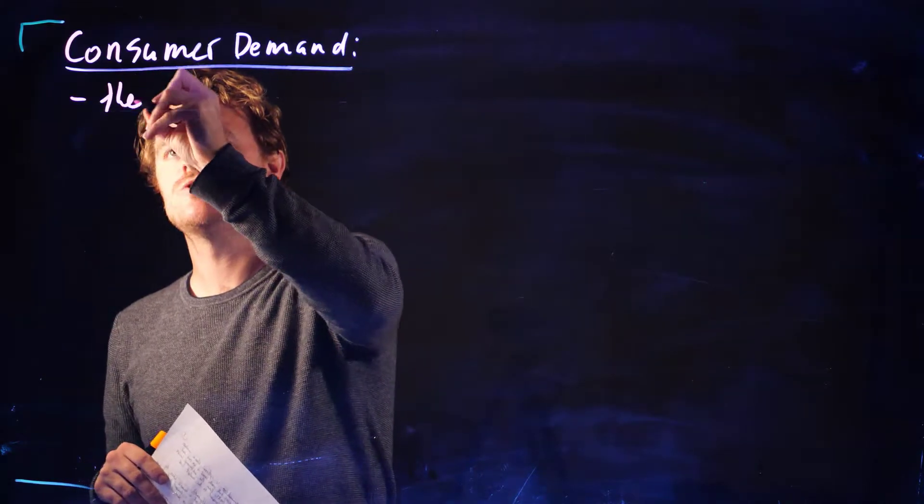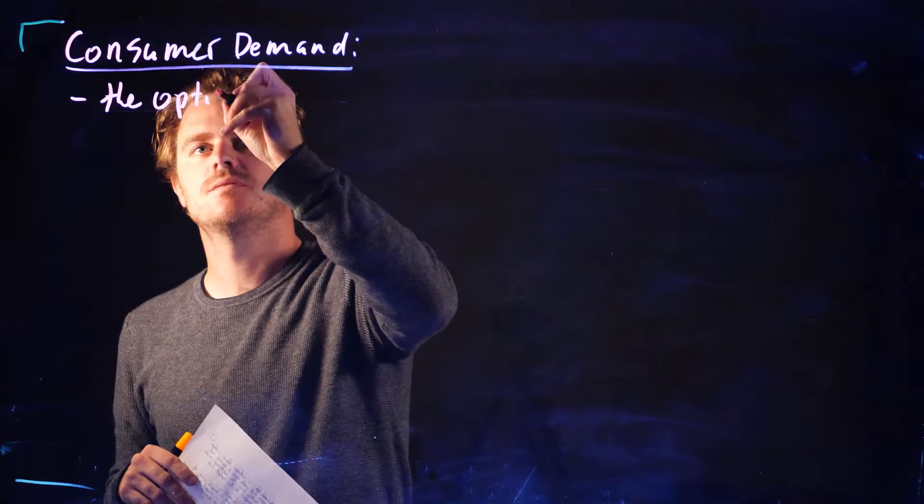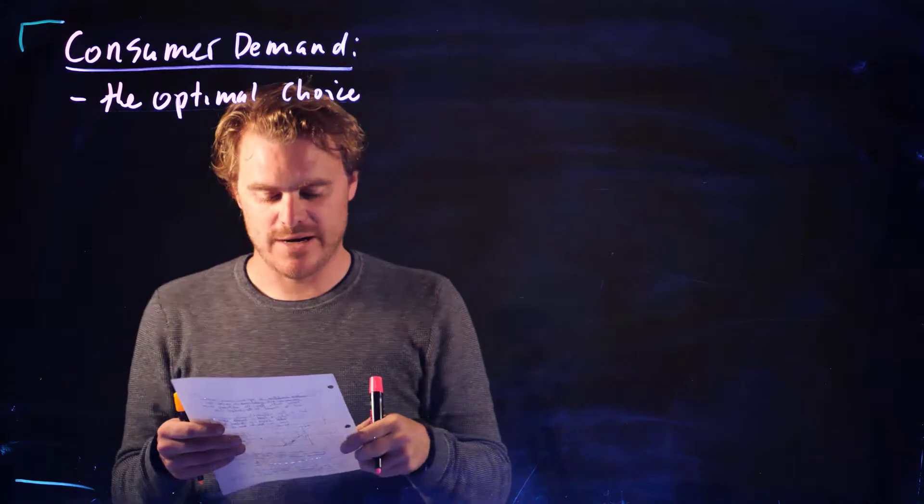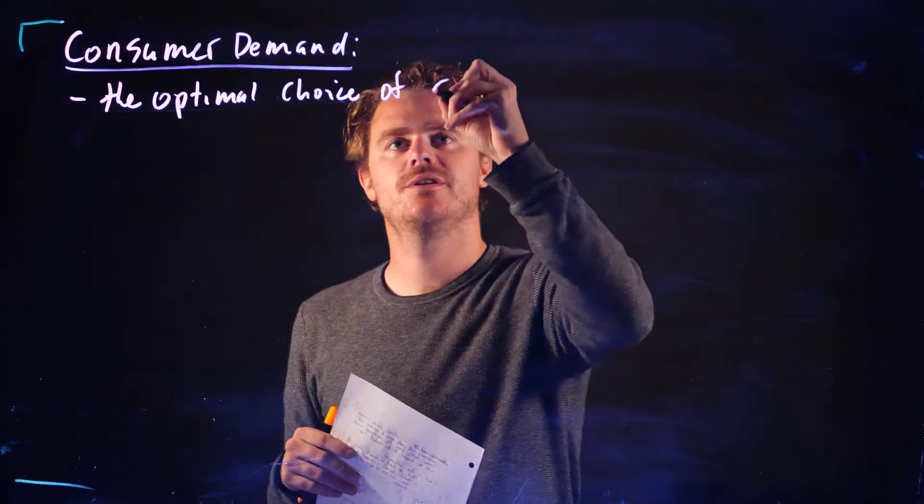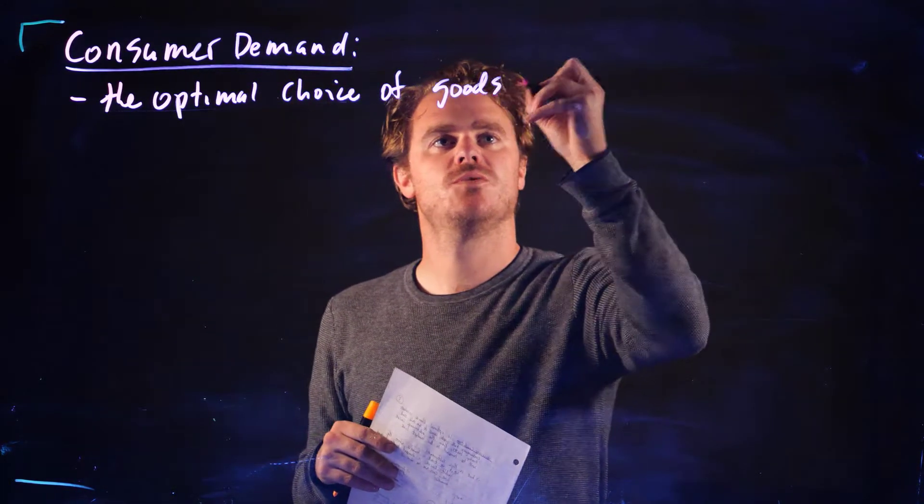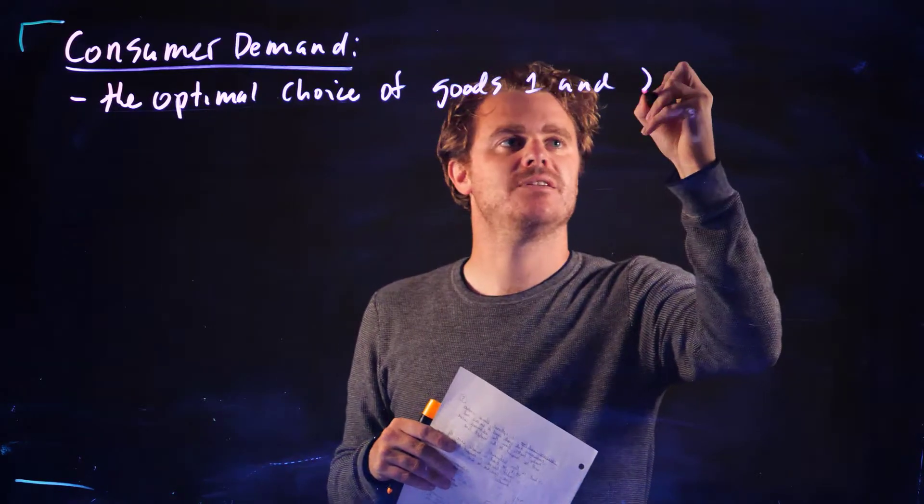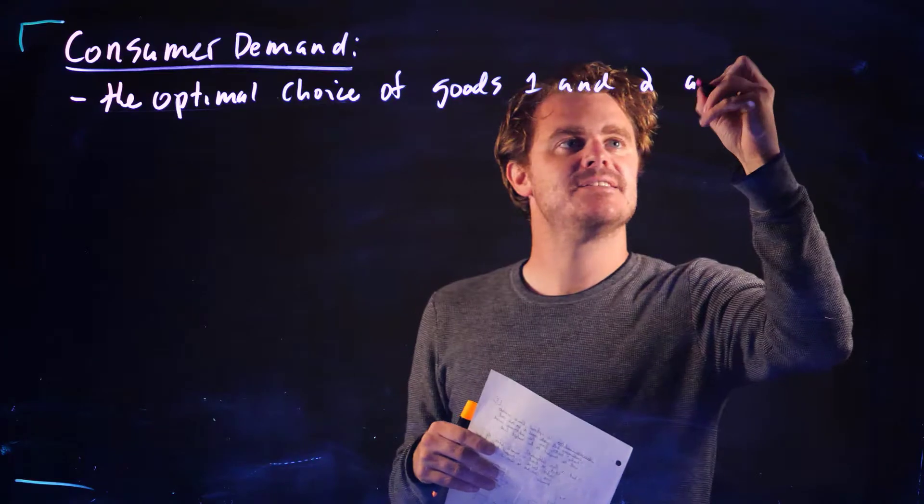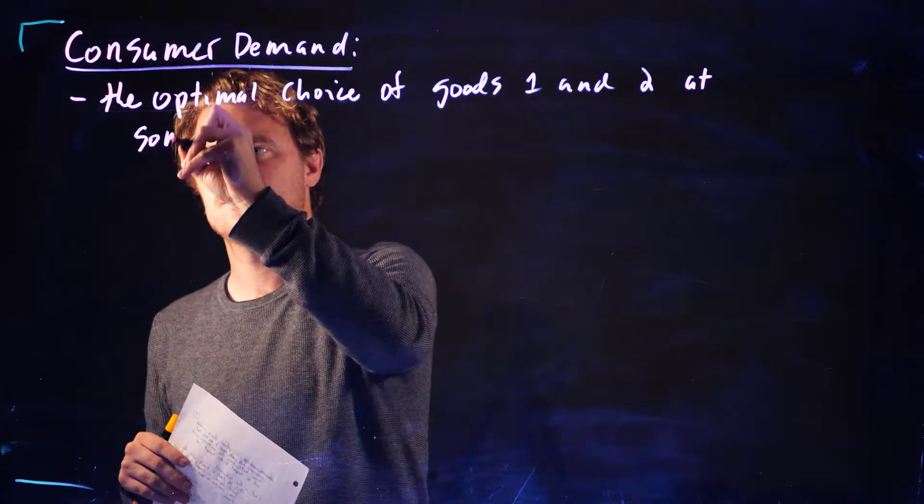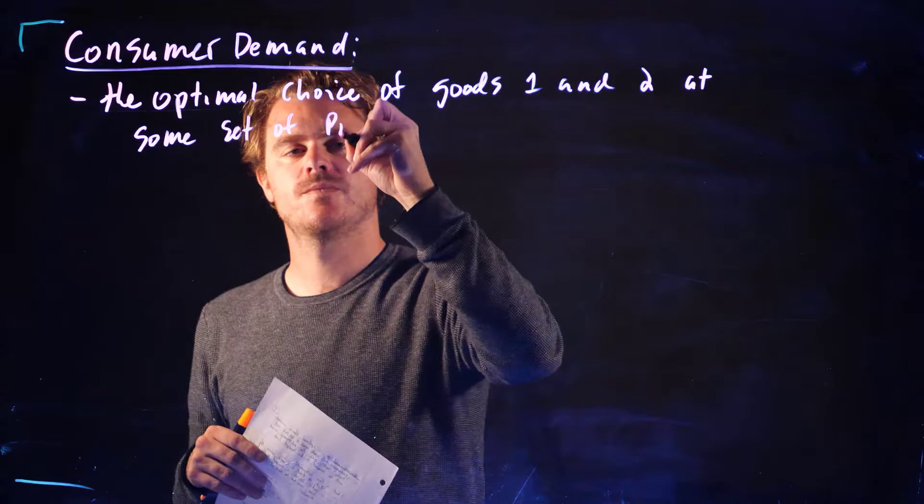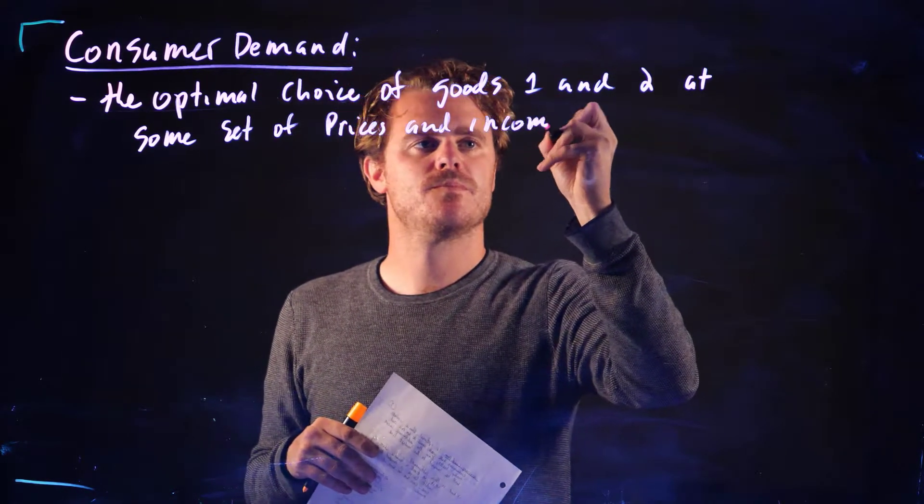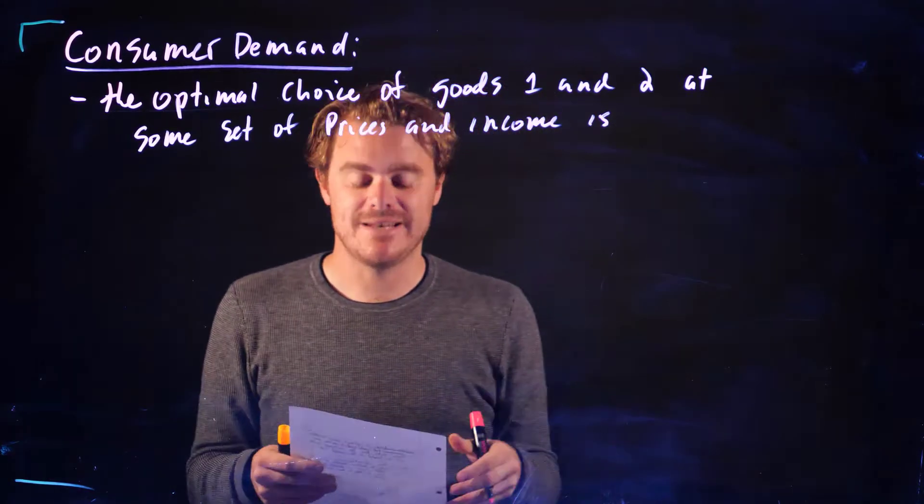So the optimal choice of goods 1 and 2, up to n if we had n different types of goods, at some set of prices and income, is called the demanded bundle.